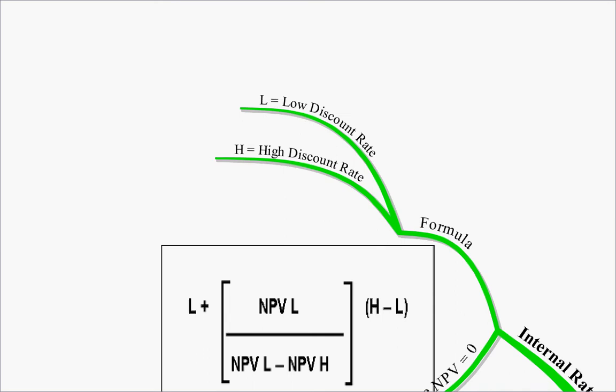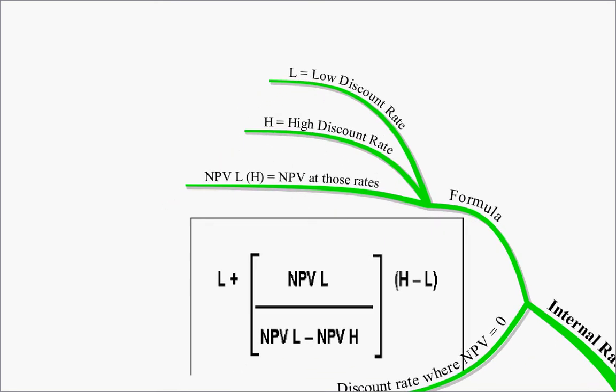Hopefully your high discount rate will give you a negative net present value, your low discount rate will give you a positive. We then get these two present values, and we feed them into the formula. And that will find the place in between those two discount rates, where the net present value equals zero.